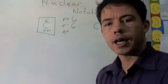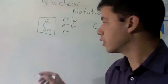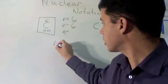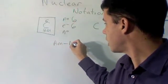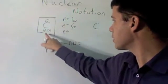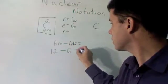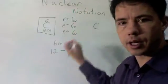And how do we determine neutrons? We learned that it's the atomic mass minus the atomic number equals neutrons. So we have atomic mass of 12 minus six equals six, so in this case we have six neutrons.